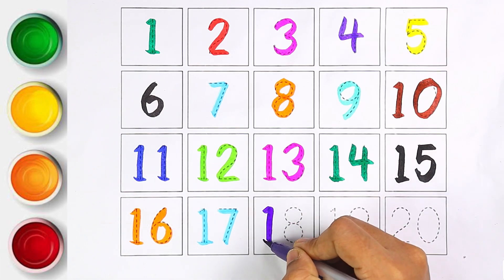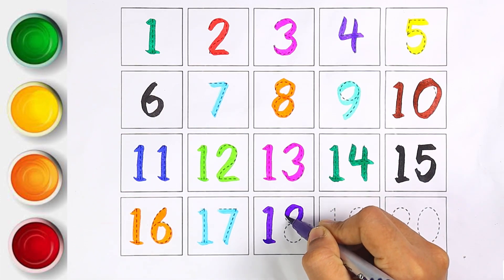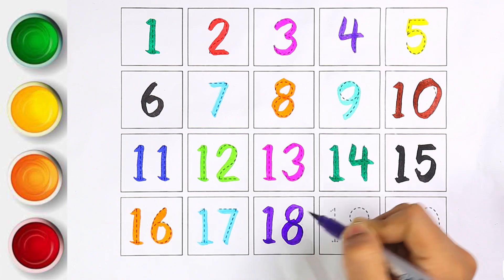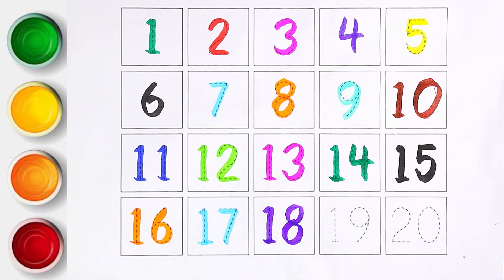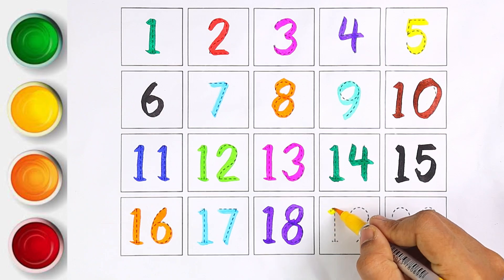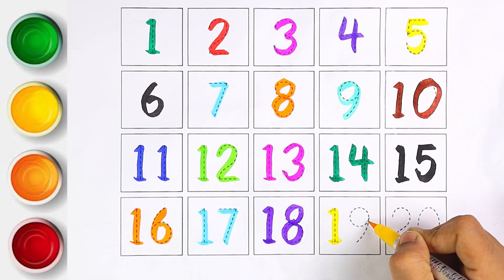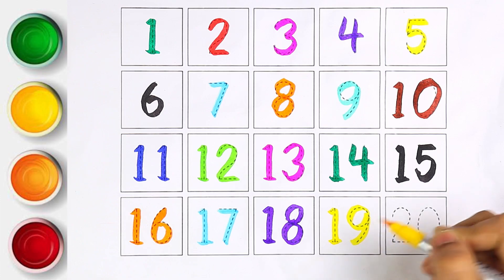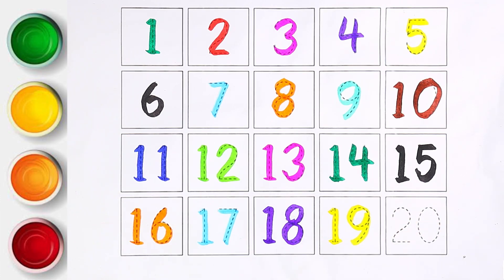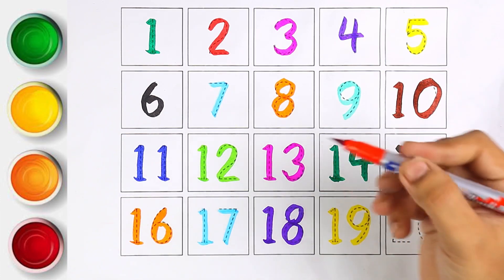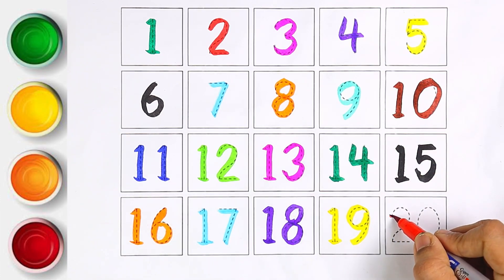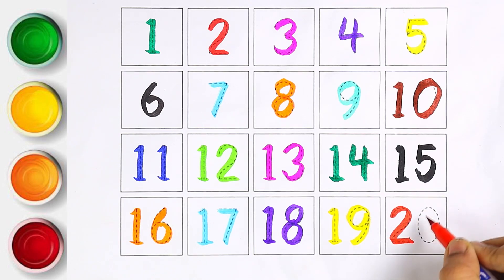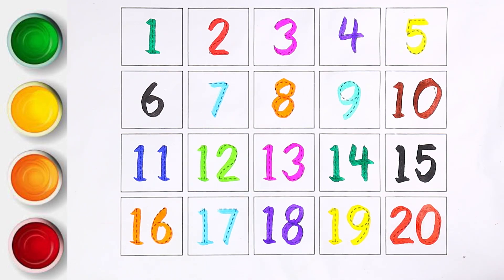Purple color — one and eight makes the number eighteen. Yellow color — one and nine makes the number nineteen. Red color — two and zero makes the number twenty.